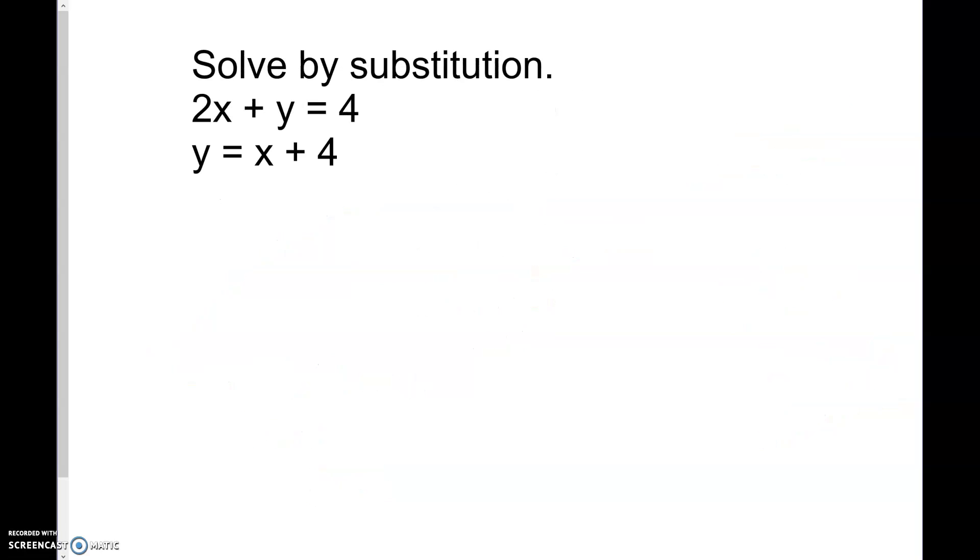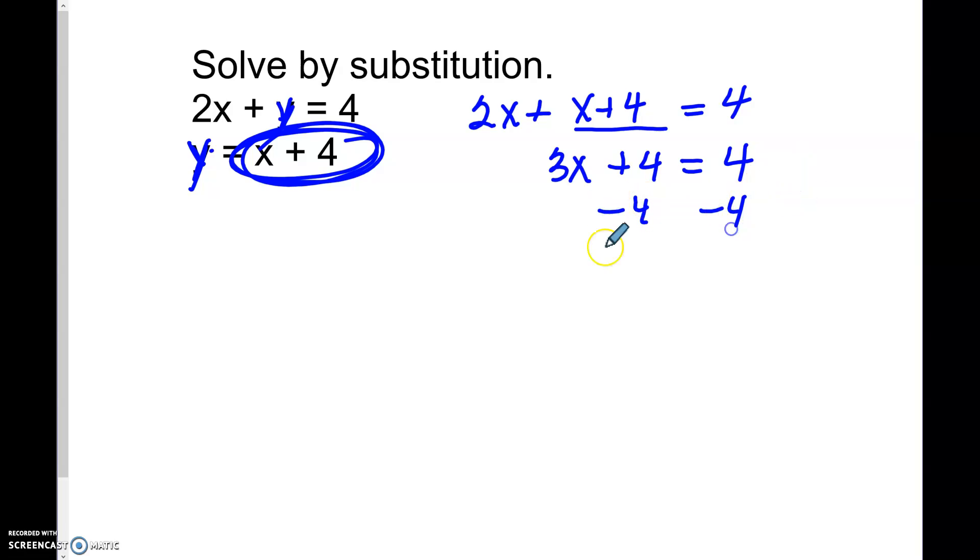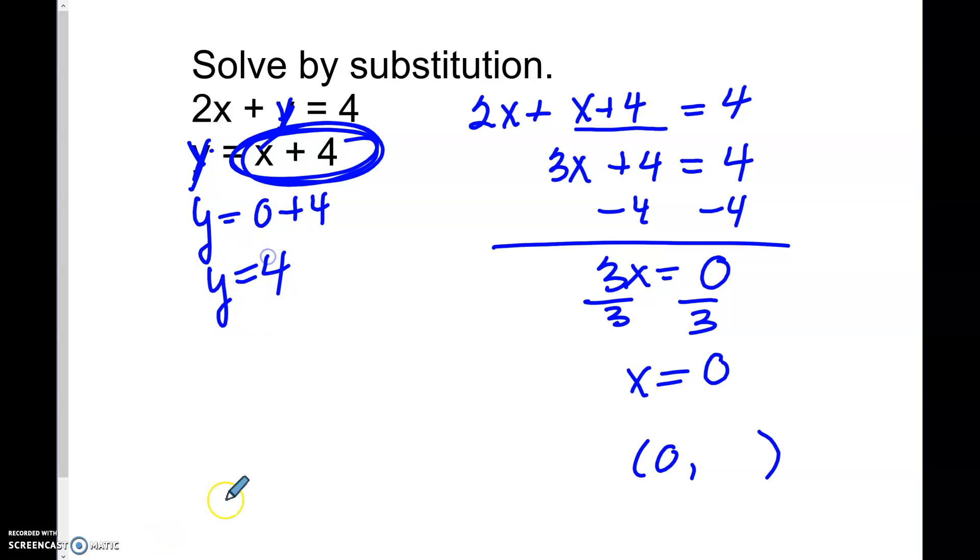Solve by substitution. We know that y equals x plus 4. So in this top equation, it says 2x plus, and this thing is y. Now, instead of writing y, I'm not going to write this y. I'm going to write what y equals, which is x plus 4. So 2x plus x is 3x plus 4 equals 4. Now let's subtract 4 from both sides. So 3x equals 0 and divide both sides by 3. So x is 0. So we know it's 0 comma something. I'm going to go into this bottom equation: y equals 0 plus 4. Well, 0 plus 4 is just 4. So it's 0 comma 4. So the solution to this system is going to be (0, 4).